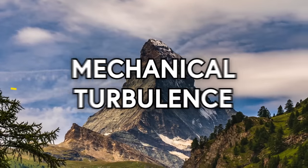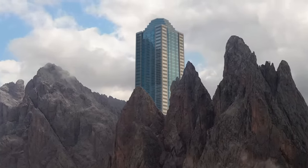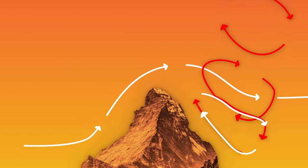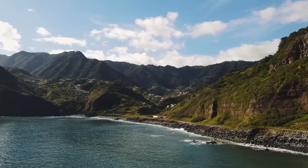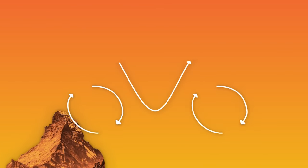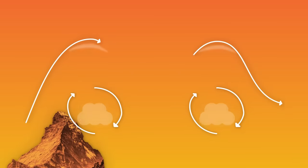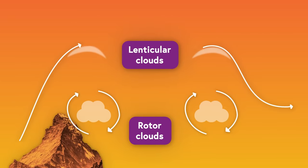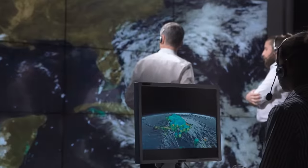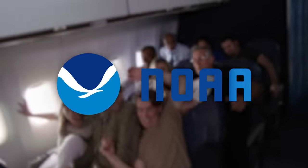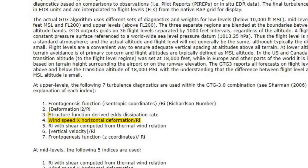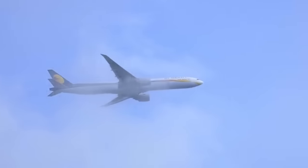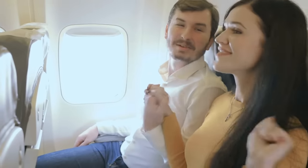Next up, mechanical turbulence, which is caused by stuff—buildings, mountains, buildings on mountains. All these things obstruct and redirect the wind, creating eddies in the troposphere that shake aircraft. One type is called mountain wave: if you've got decently fast wind moving perpendicular towards a mountain range, it'll bounce off the top and kick up rotors of air way higher than the mountains themselves, sometimes all the way into the jet stream. NOAA uses an algorithm called GTG that accounts for everything from wind speed to different structures' eddy dissipation rates to forecast where turbulence might be. Pilots and dispatchers review these models to pick the safest, smoothest flight path ahead of time, hopefully avoiding the turbulence entirely.